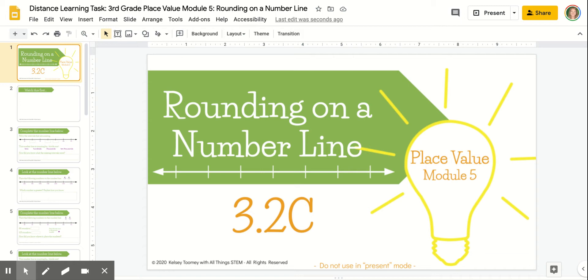Now, sometimes our number lines will be counting by 10s, sometimes by hundreds, thousands, or even 10,000s. So it's important to pay attention to what the number line is counting by and what place value you're trying to round the number to.